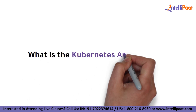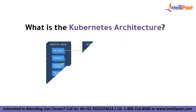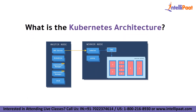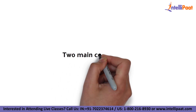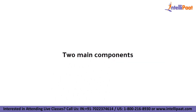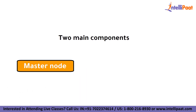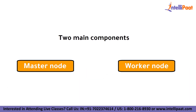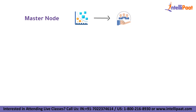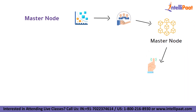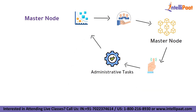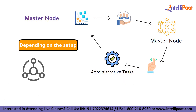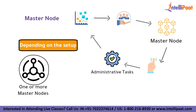Now we will move on to understand Kubernetes' architecture. In Kubernetes, various sub-components can be grouped into two main components: the master node and the worker node. The management of a cluster is the responsibility of the master node, as it is the first point of contact for almost all administrative tasks for the cluster. Depending on the setup, there will be one or more master nodes in a cluster.